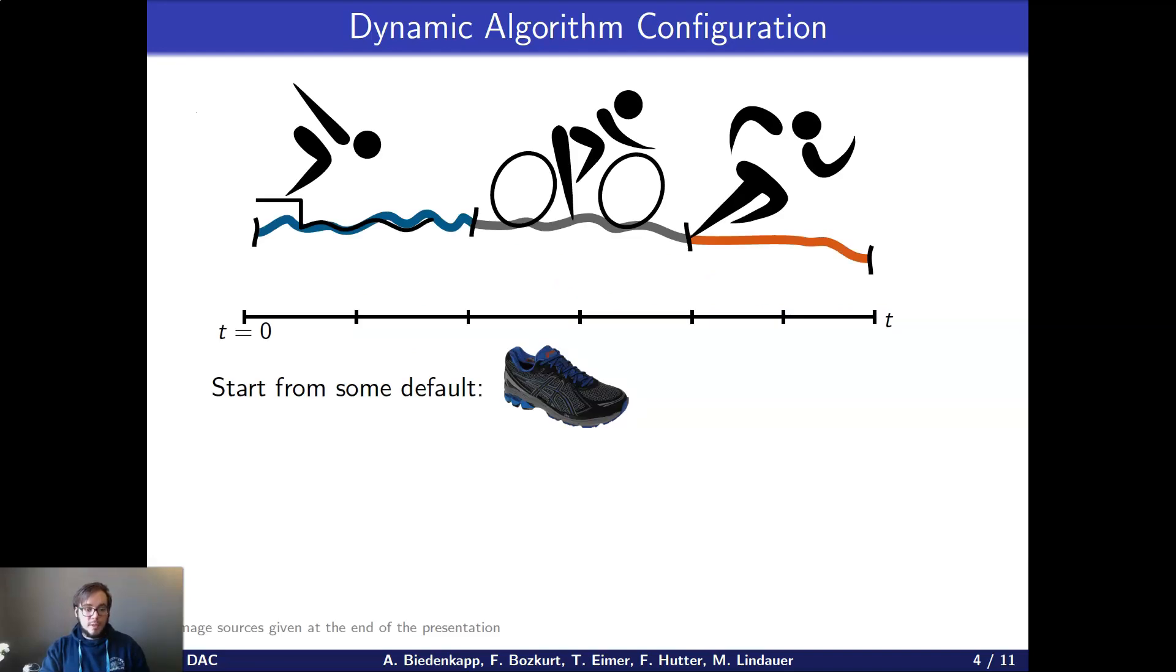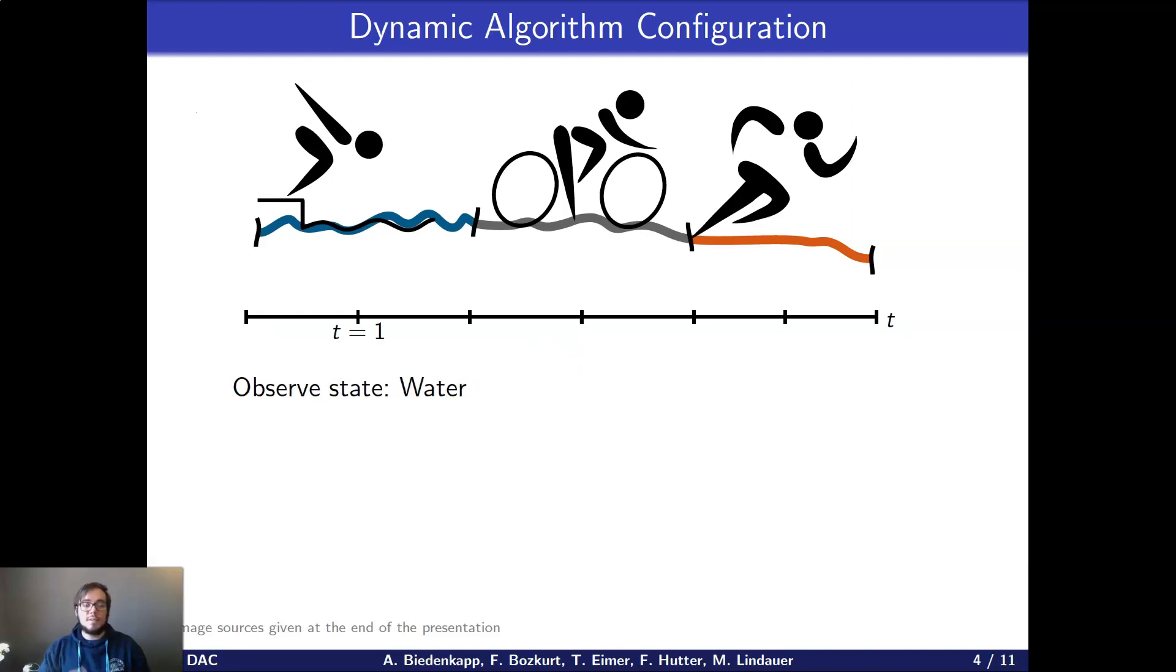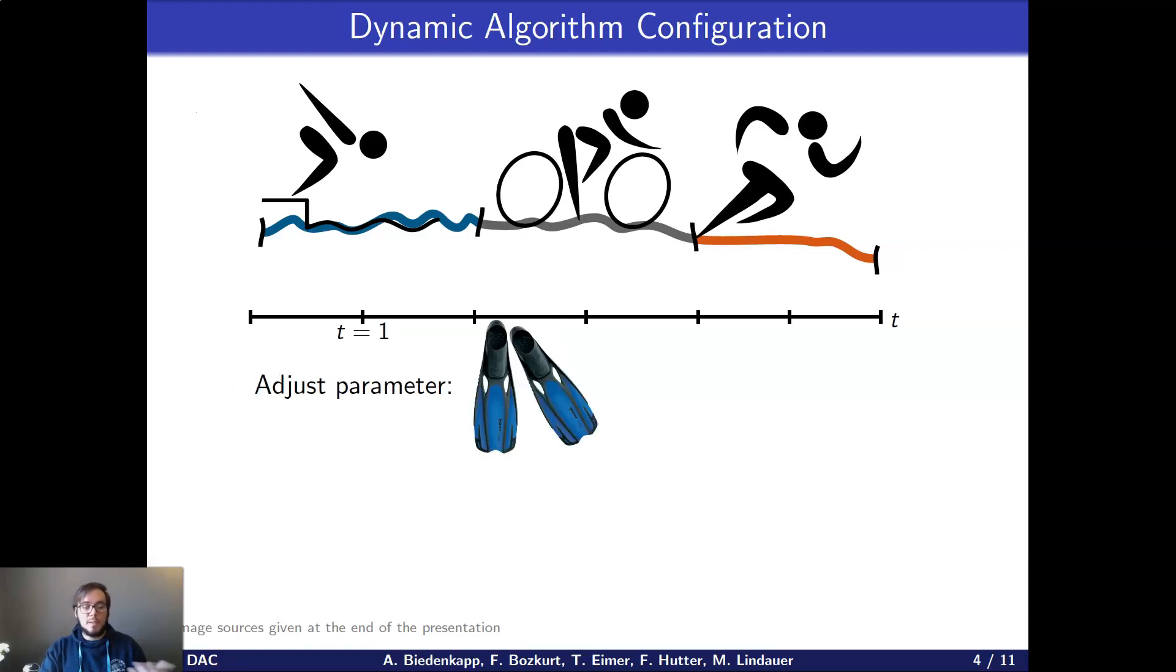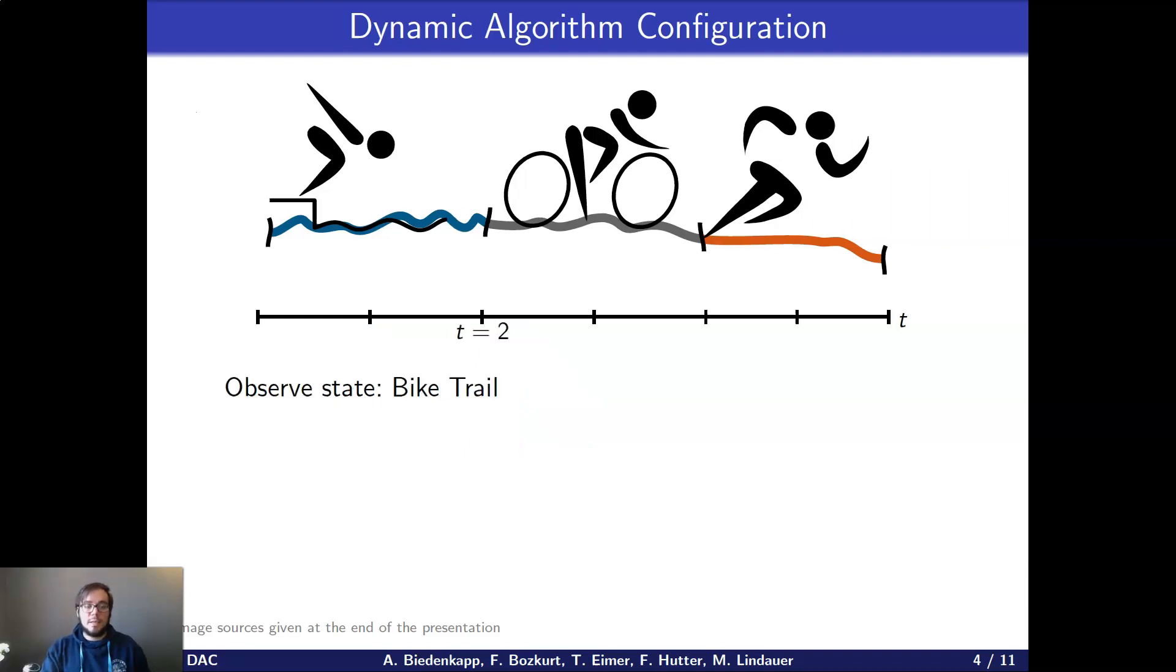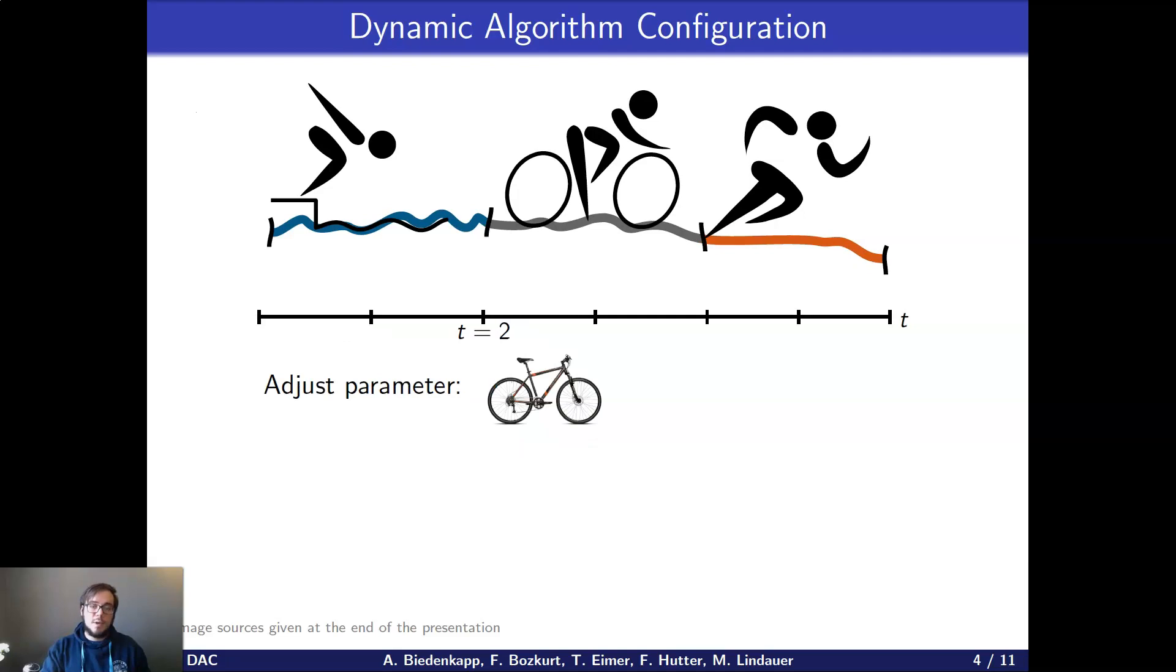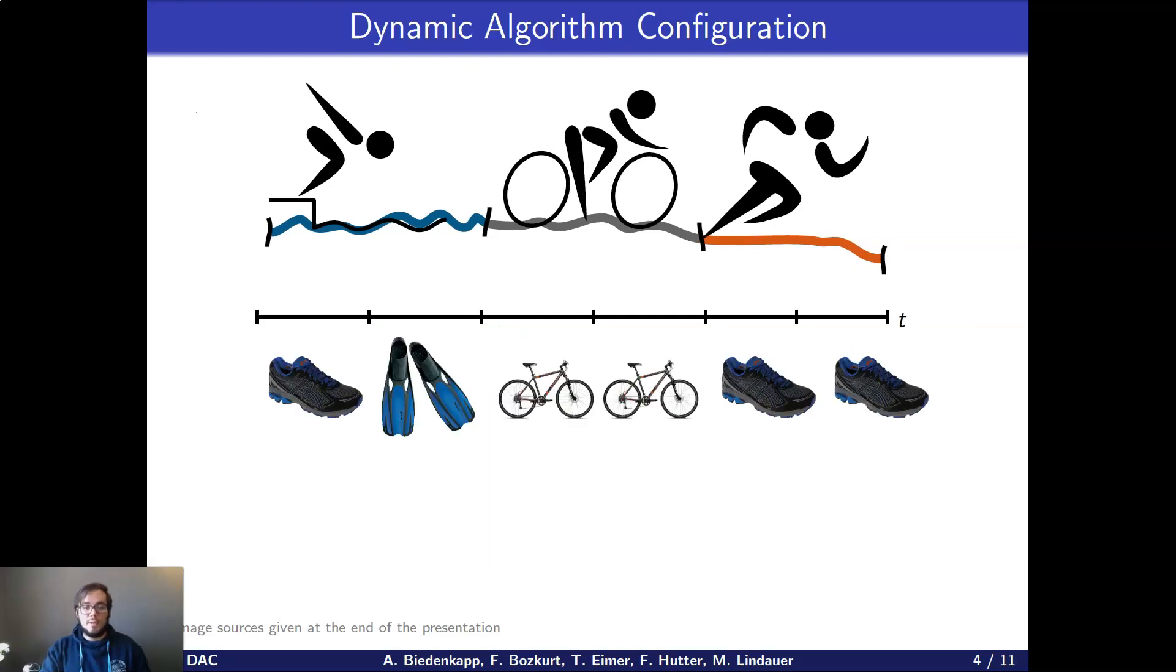And how we do that is just schematically, we start from some default value, run the algorithm for a few steps, and we generate some statistics over these few iterations that it ran for. And this gives us a state of the algorithm. So we see how the algorithm has progressed. And then the configurator can observe this state and decide, well, the algorithm performed poorly or performed very well and adjust the parameter accordingly. Then we run the algorithm for a few more steps, get a new state and adjust the parameter accordingly. And we do that until the whole instance is solved.